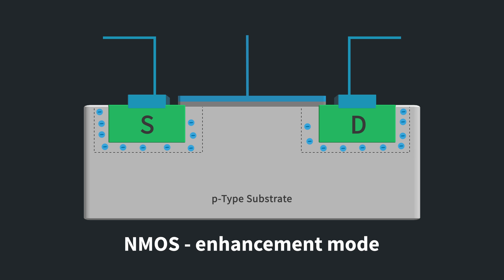In an enhancement mode device, this is when there is no voltage on the gate, there is absolutely nothing happening in the channel, and no current can flow. This is called the cutoff region. We're not going to spend any more time on this because, frankly, it's pretty straightforward.